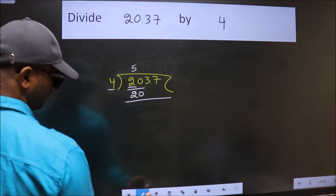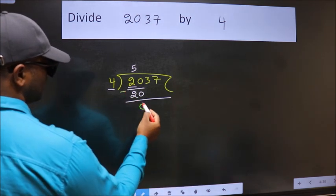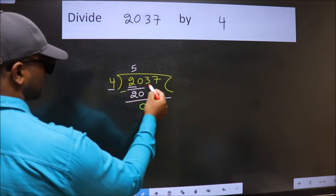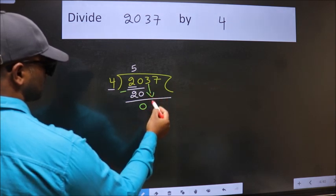Now, we should subtract. We get 0. After this, bring down the beside number. So, 3 down.